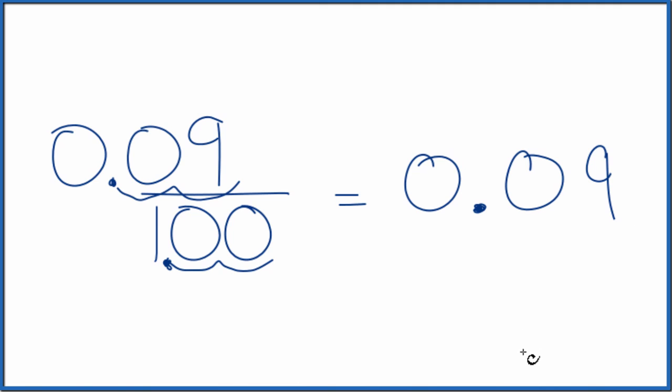So in answer to our question, we take the fraction 9 one-hundredths, 9 over 100, we end up with the decimal 0.09.